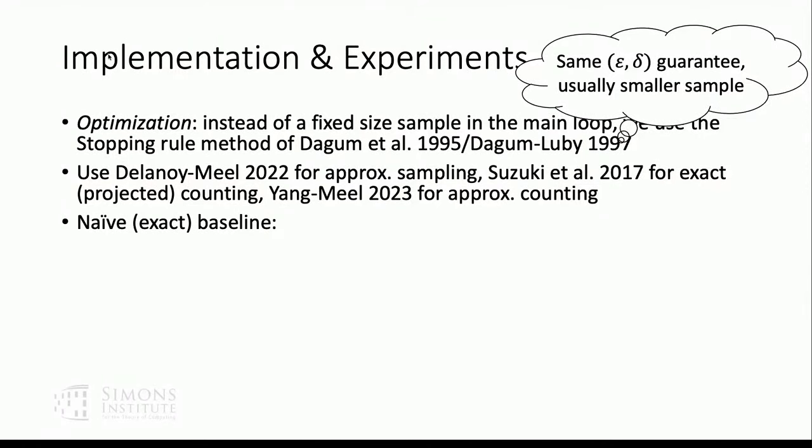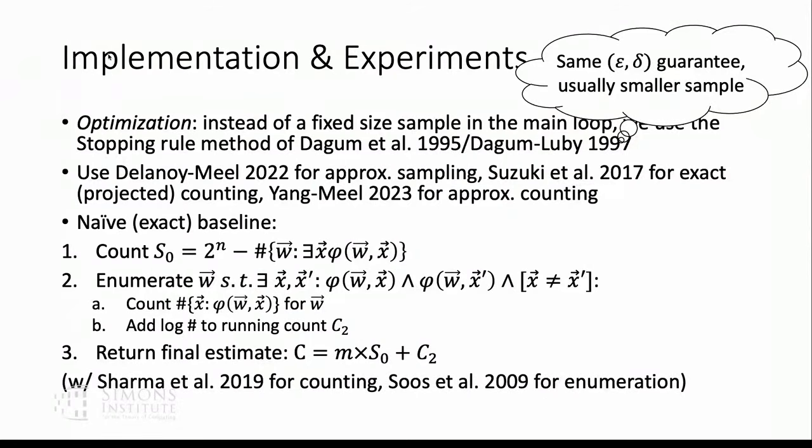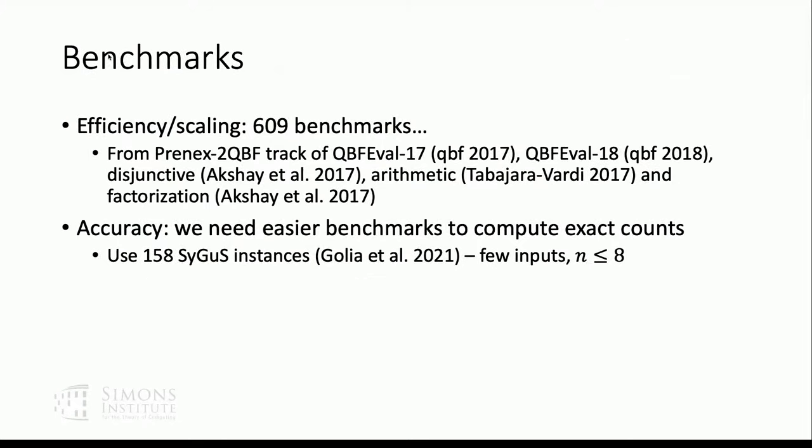And now the naive baseline that we're going to compare against. Like, really, this is the first work to study this problem. So we didn't really have a good baseline. So it kind of does the naive thing, right? Like, everything is just exact counting. I'm just enumerating those W's that have two distinct solutions. And I do the exact count for them. And, obviously, this blows up. So it's a straw man. But then again, what else is there? And so there's some state-of-the-art tools for the enumeration counting.